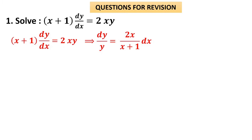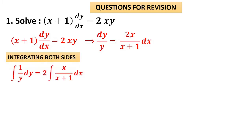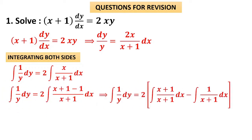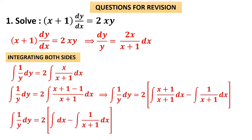Now we are ready with function of y with dy and function of x with dx, so simply integrate. Integral of (1/y)dy equals 2 times integral of x/(x+1)dx. On the right-hand side, add and subtract 1 to manage the denominator, giving 2 times integral of [(x+1)/(x+1) − 1/(x+1)]dx, which becomes 2 times integral of [dx − 1/(x+1)dx]. Now everything is ready for integration.